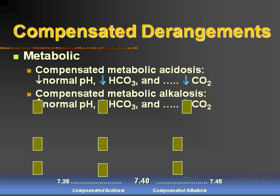Compensated metabolic alkalosis: the alkalosis tells us that the pH is going to be on the high end — compensated means it's within the range of 7.41 to 7.45. Metabolic tells us to look at the bicarb, and since it's an alkalosis, we have too much base. The body is then increasing the CO2 or increasing the acid in the system in order to normalize.